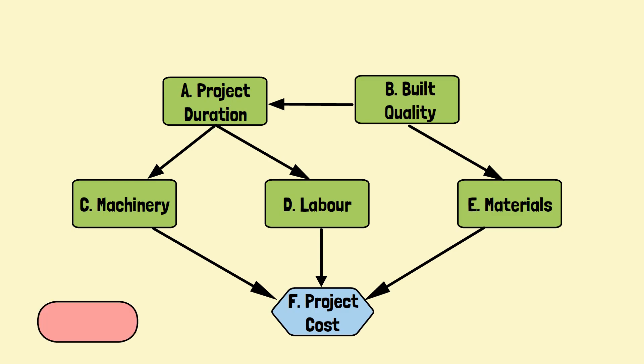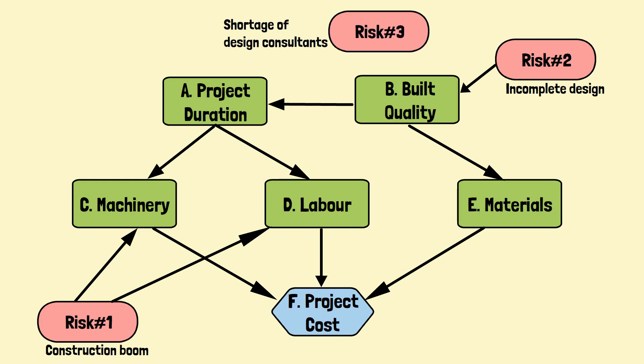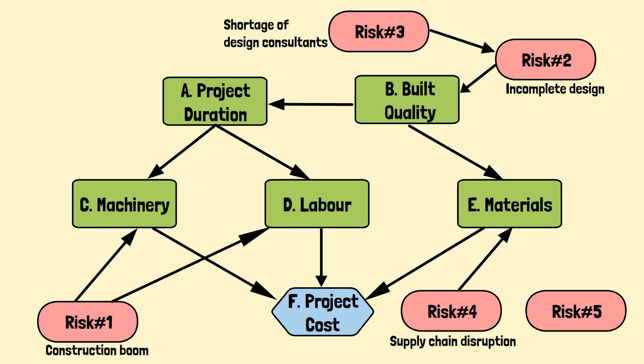Each of these variables can be impacted by risks. Let's identify and model a few risks in the influence diagram. Risk number one: the construction boom in the region can impact the availability of machineries and labor, and will drive up the costs. Risk number two: incomplete building design will affect the built quality. A risk can also be triggered by another risk — for example, the incomplete building design can be due to a shortage of design consultants. Additionally, any variable or risk can be influenced by more than one risk. For example, the risk of supply chain disruption and the risk of imposing higher import tariffs could both drive up the material cost, and supply chain disruption can increase the project duration as well.